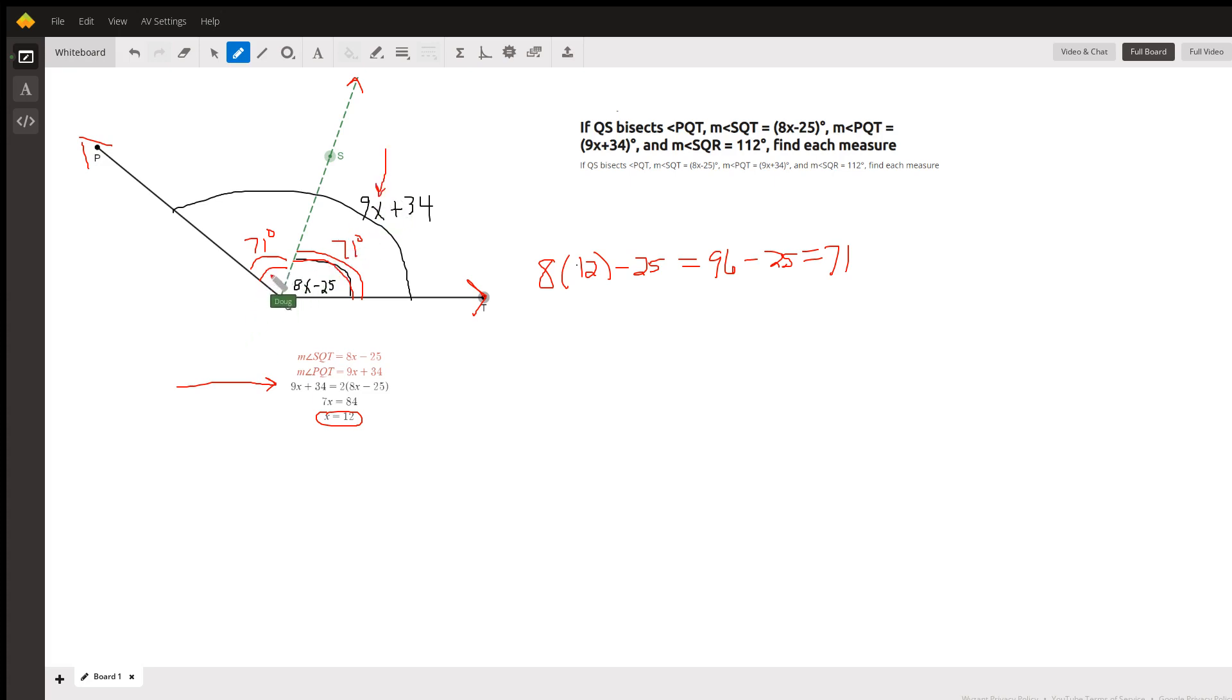Now this problem also mentions angle SQR. We didn't have a diagram showing us where R is located, but we're told that the measure of angle SQR is 112. So I could maybe put ray QR down here.